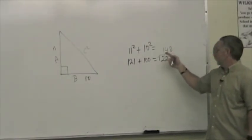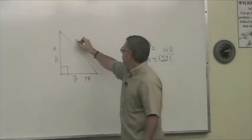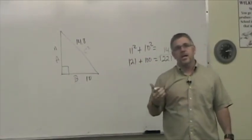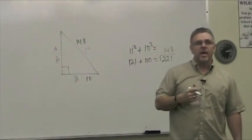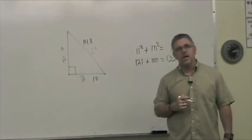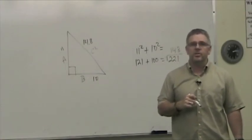Now, is that a reasonable answer to think that this distance from here to here is 221 feet, especially if this is 11 feet here and this is only 10 feet here? No, that's not a reasonable answer. So what we're going to do now is we need to find the square root of 221.